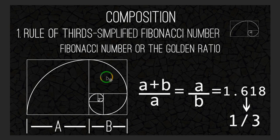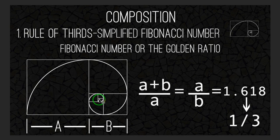Here we have Fibonacci's number and we can see that basically the point kind of spirals down into this little point right here on a third. Notice this is broken up into thirds — a third and two thirds, two thirds and one third horizontally, one third and two thirds vertically. So in essence Fibonacci's number and the golden ratio are very similar to each other. We're going to use this as compositional rule number one.